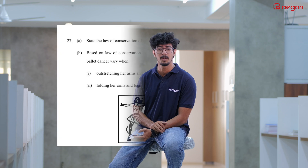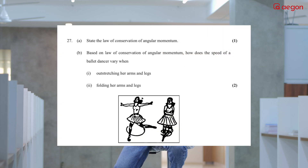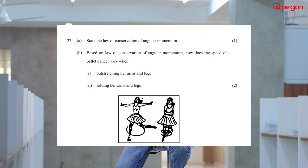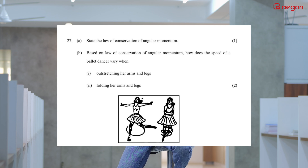Hi, this is G.R. We are going to the exam. This is the plus one exam. Based on the law of conservation of angular momentum, how does the speed of a ballet dancer vary when stretching her arms and legs versus folding her arms and legs?